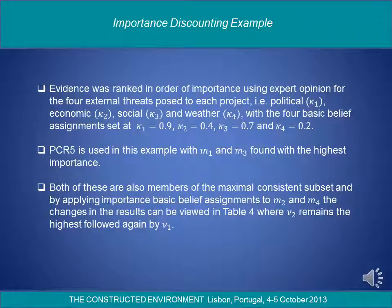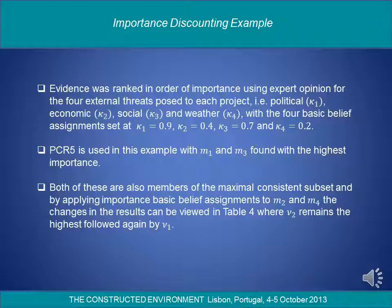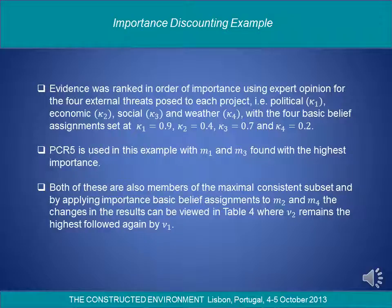Importance discounting example: Evidence was ranked in order of importance using expert opinion for the four external threats posed to each project — Political, Economic, Social, and Weather — with the four basic belief assignments set at κ1=0.9, κ2=0.4, κ3=0.7, and κ4=0.2. PCR5 is used in this example, with M1 and M3 found with the highest importance. Both of these are also members of the maximal consistent subset, and by applying importance basic belief assignments to M2 and M4, the changes in the results can be viewed in Table 4, where New 2 remains the highest, followed again by New 1.